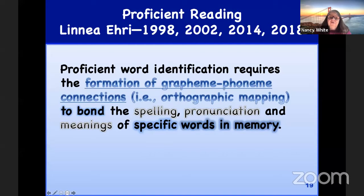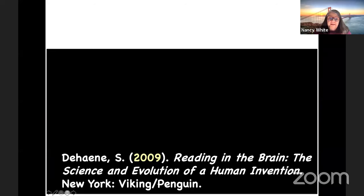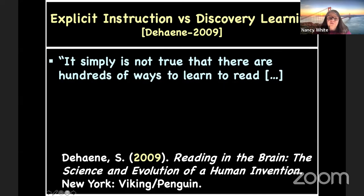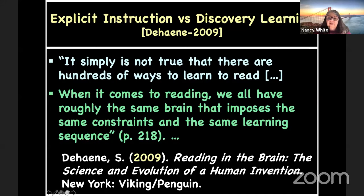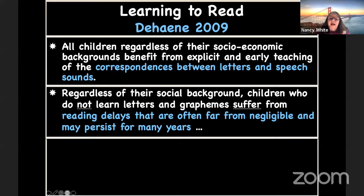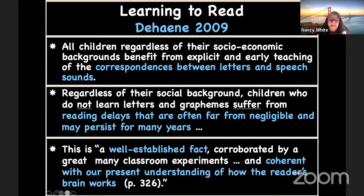Proficient word identification requires the formation of grapheme-phoneme connections to bond the spelling, pronunciation, and meanings of specific words in memory. Stanislas Dehaene, a French researcher, says: 'It simply is not true that there are hundreds of ways to learn to read. When it comes to reading, we all have roughly the same brain that imposes the same constraints and the same learning sequence. All children, regardless of their socioeconomic backgrounds, benefit from explicit and early teaching of correspondences between letters and speech sounds. Children who do not learn letters and graphemes suffer from reading delays that are often far from negligible and may persist for many years.' This is a well-established fact corroborated by many classroom experiments.